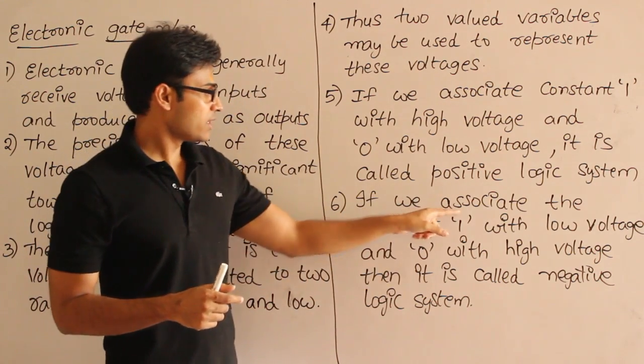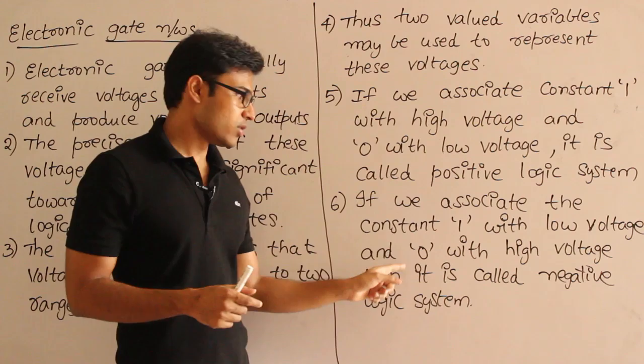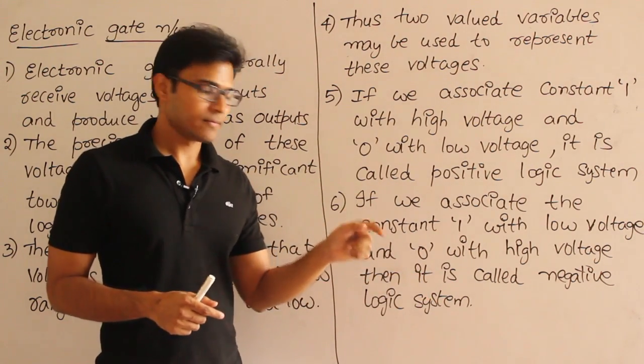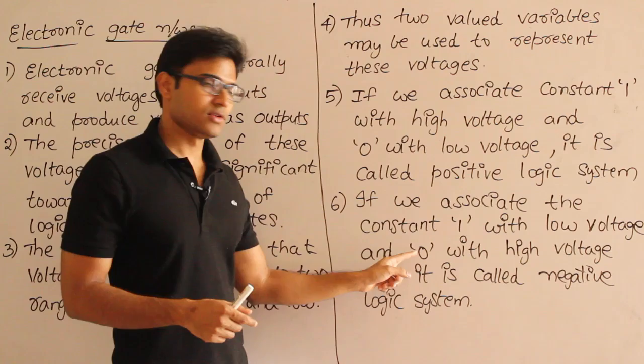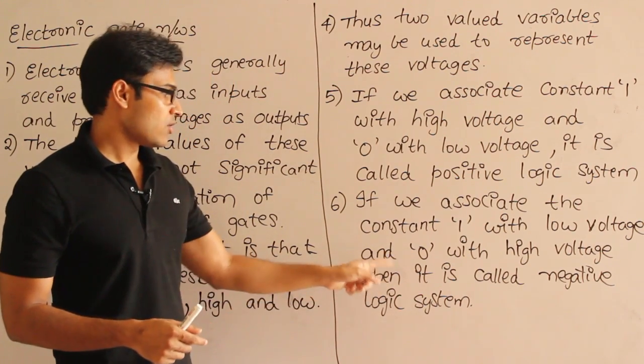The other one is: if we associate the constant 1 with low voltage - which means for the low voltage we are giving 1, and for the high voltage we are giving 0 - then it is called negative logic system.